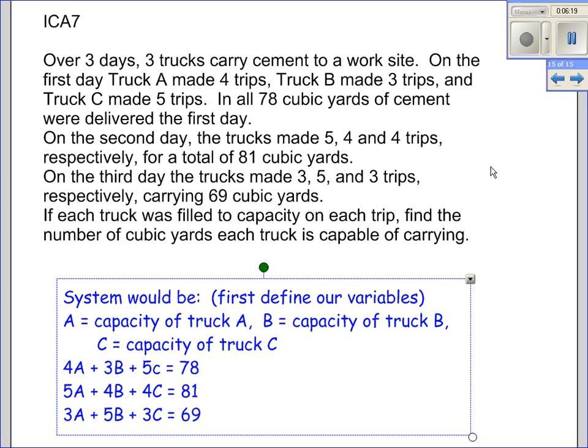So just one more thing I'm going to look at here. It's a story problem. Over 3 days, 3 trucks carry cement to a work site. We know on the first day how many trips were made by the first truck, how many were made by the second truck, how many were made by the third truck, and the total amount of cement that was delivered that first day. We have the same information for the second day and the same information for the third day. And it's really important when you're solving these word problems, pay attention to what you're being asked because that will tell you what your variables are.